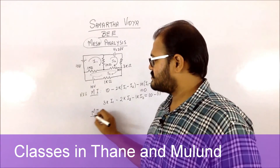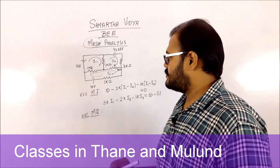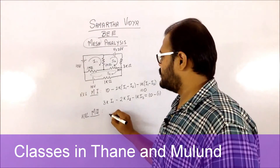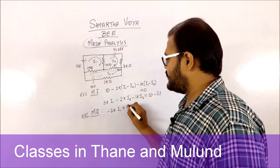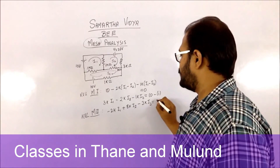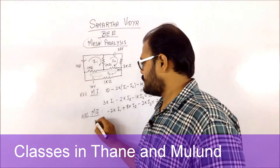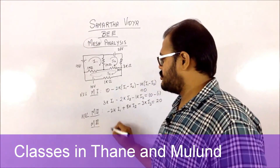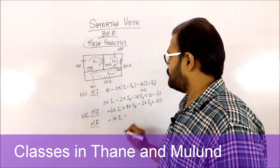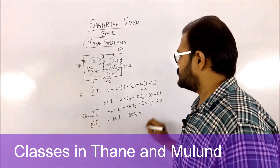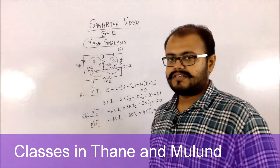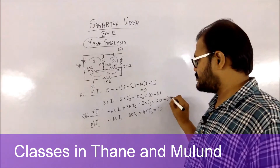Applying KVL to the second mesh, the equation comes out as: −2kΩ·I1 + 8kΩ·I2 − 3kΩ·I3 = 20 volts. Applying KVL to the third mesh gives: −1kΩ·I1 − 3kΩ·I2 + 4kΩ·I3 = 10.